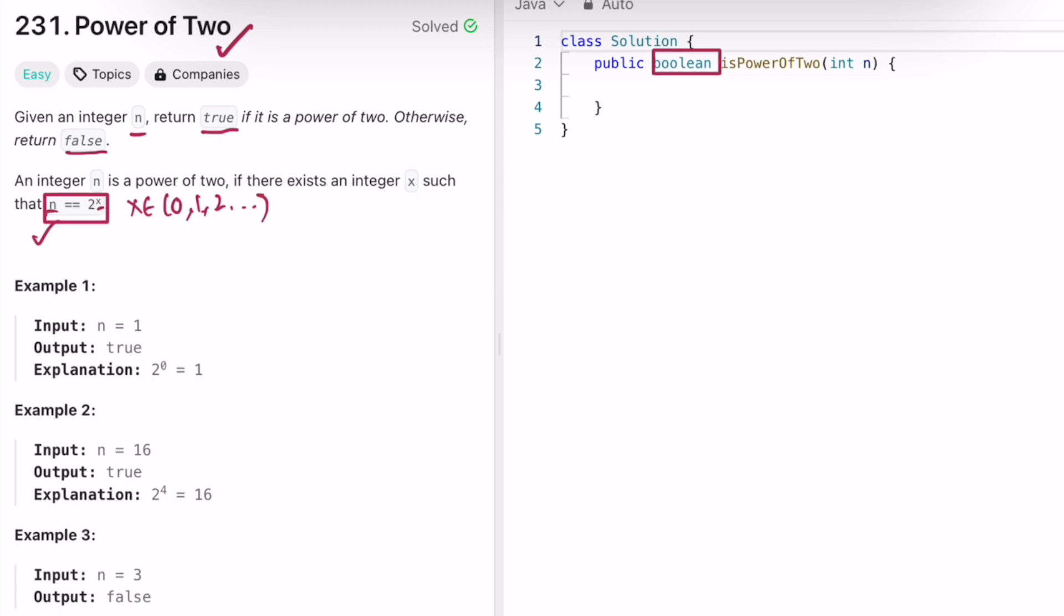Instead of looping through all the integers and checking if it's matching the input num, let's represent the decimal number given in its binary format. This is the standard code, right?